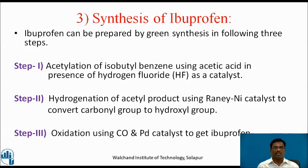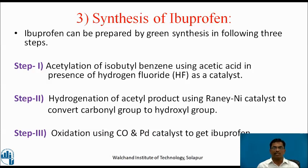Step 1: acetylation of isobutylbenzene using acetic acid in the presence of hydrogen fluoride as a catalyst. Step 2: hydrogenation of the acetyl product using Raney nickel catalyst to convert the carbonyl group to a hydroxyl group.